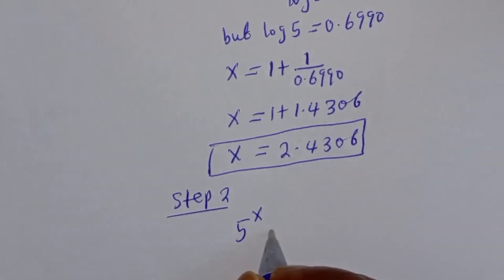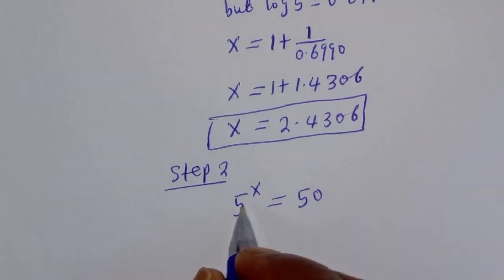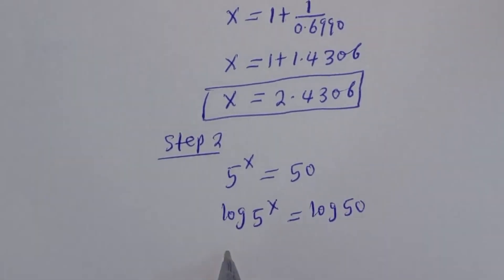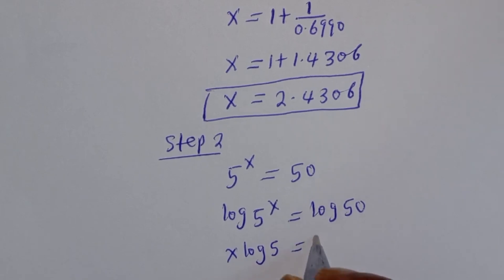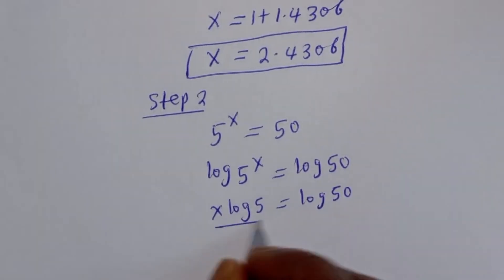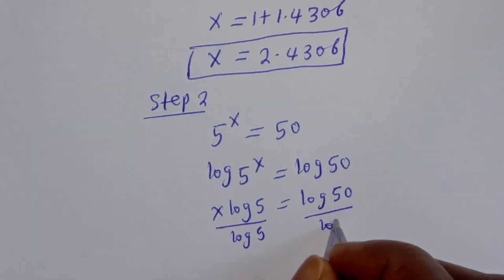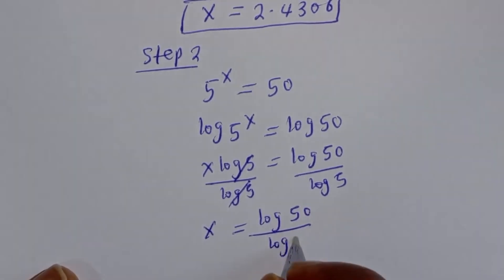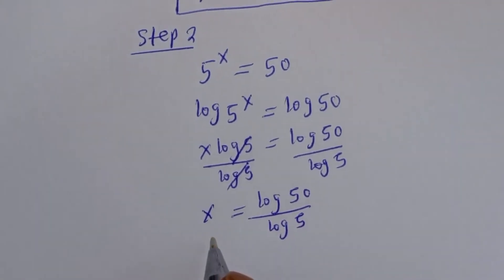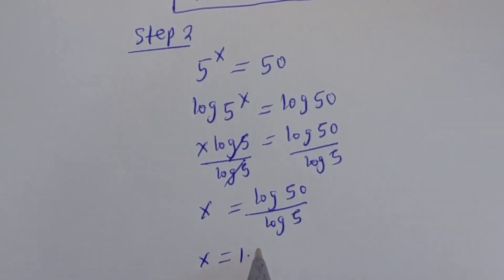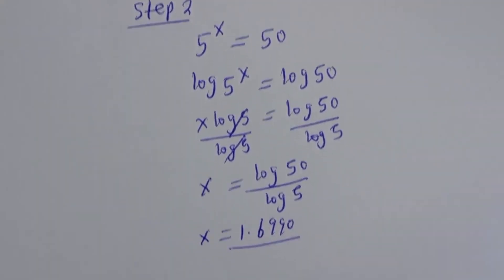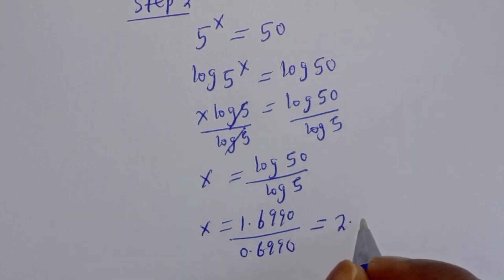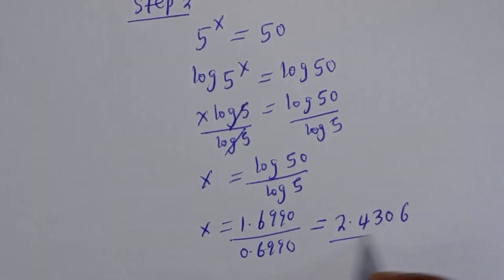Starting again with 5 raised to power s is equal to 50, and s times log 5 is equal to log 50. Dividing both sides by log 5 gives s equal to log 50 over log 5. From the calculator, log 50 is 1.6990 and log 5 is 0.6990, so dividing gives s equal to 2.4306. This is the final answer.